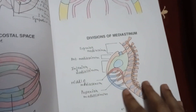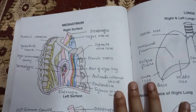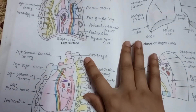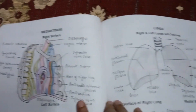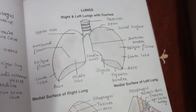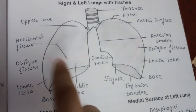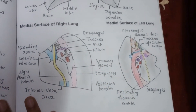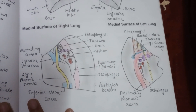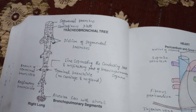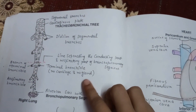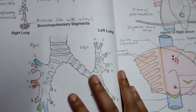This is all about your thorax and thoracic walls. Now, this is the mediastinum — left surface and right surface. These are the lungs and these are the lobes. You can see the lobes. This is the medial surface of the right lung and the medial surface of the left lung. Now, this is the tracheobronchial tree — very important in the case of lung disease. This is the bronchopulmonary segment, also very important.